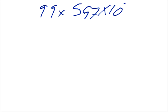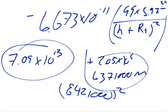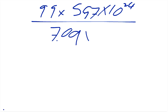and then the top of our fraction, so we had 99 times 5.97 times 10 to the 24th, and so when you multiply all of that, and you put it over our 7.09 times 10 to the 13th,